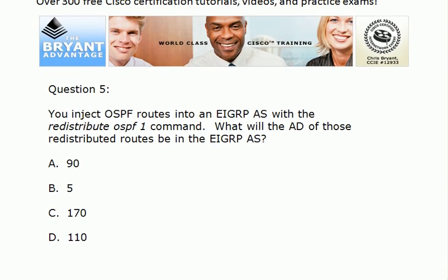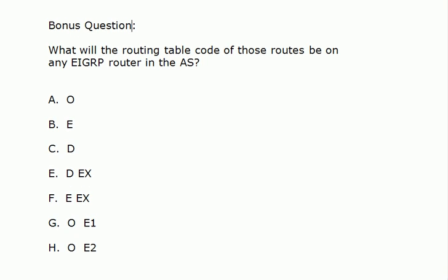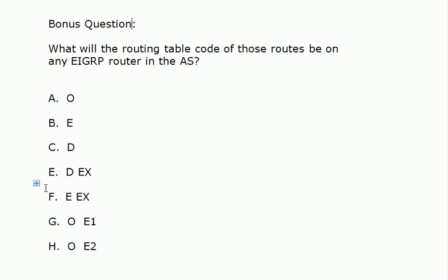Question five: when you redistribute routes into EIGRP, they are considered external EIGRP routes and they're going to have an administrative distance of 170. For our 25-point bonus question, the routing table code is going to be D EX. Note that OE1 and OE2 are valid codes, but that's if we redistribute routes into OSPF.